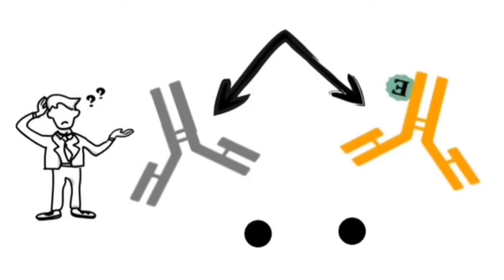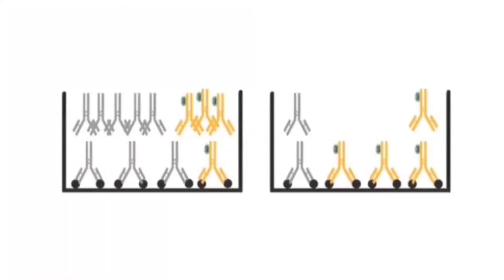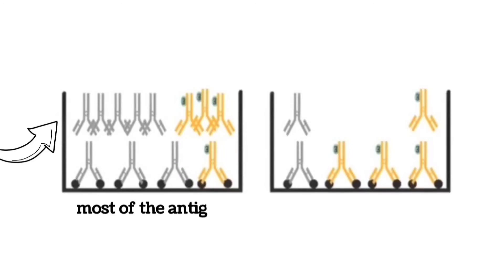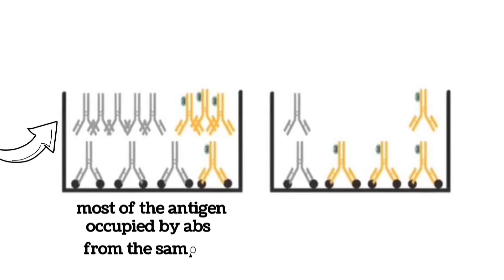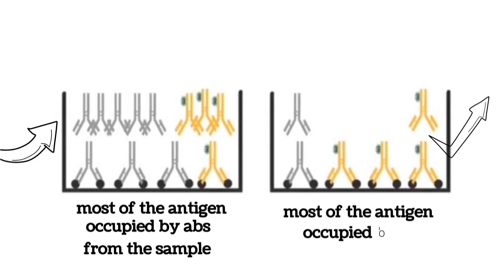These two types of antibodies will compete with each other to bind the antigen present in the well. The antibody with the greater concentration wins the competition. If the concentration of antibodies from the sample is more than the enzyme-linked antibodies, the sample antibodies will occupy most of the antigen. In the reverse condition, most of the antigen will be occupied by the enzyme-linked antibodies.